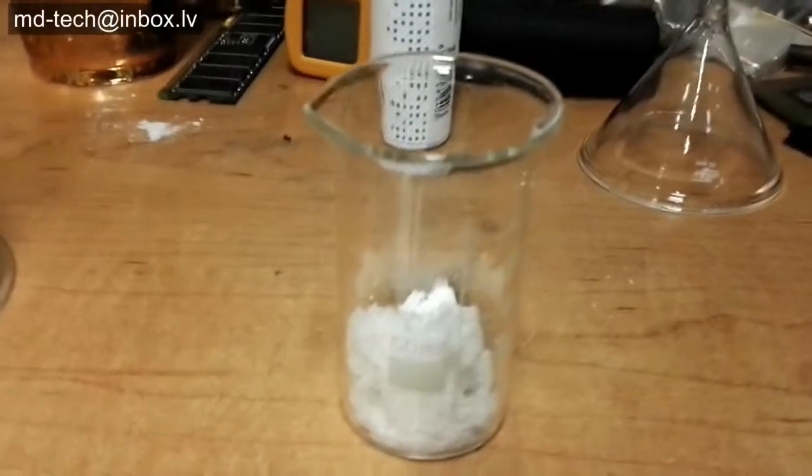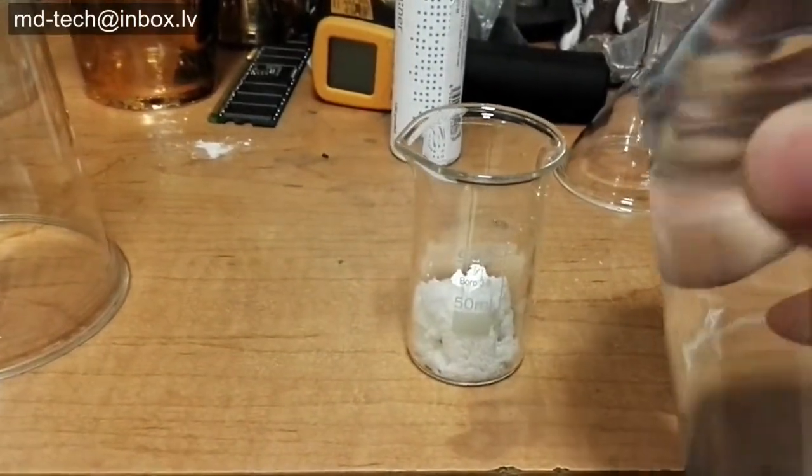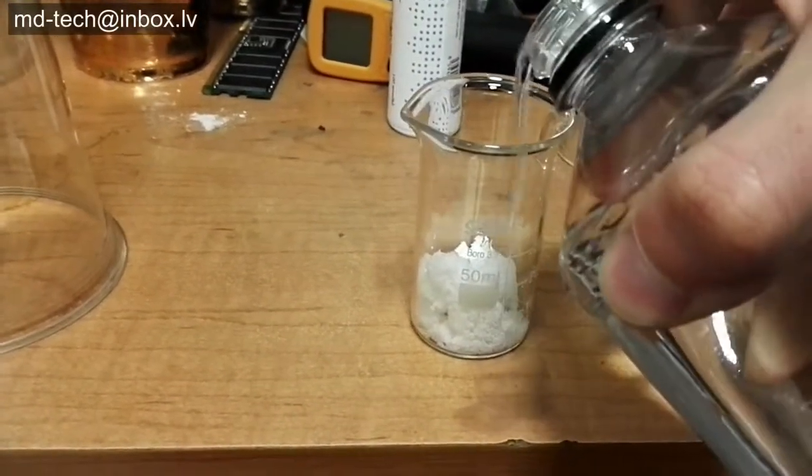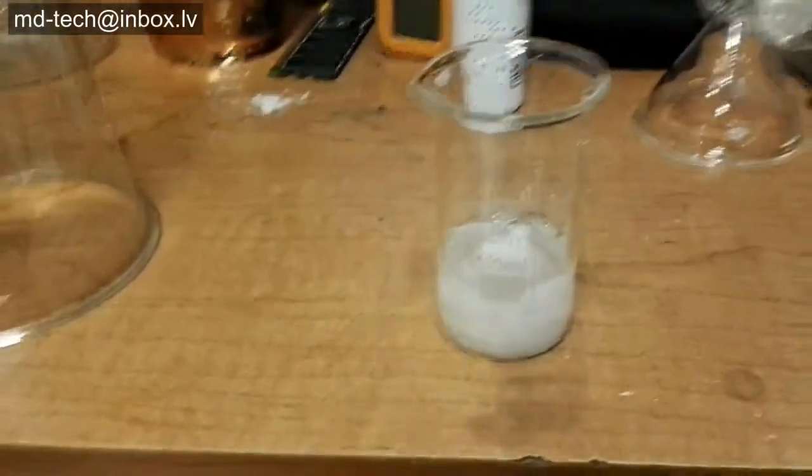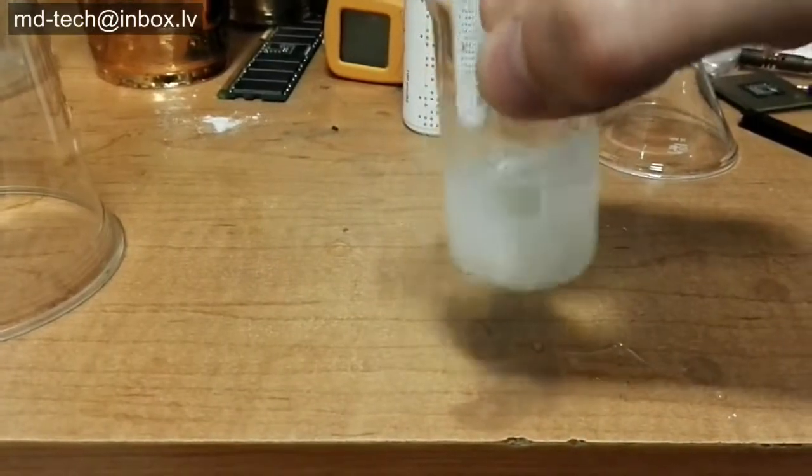Pour 4 grams of potassium iodide into a test tube. Add about 3 milliliters of distilled water to the test tube. Shake the test tube to dissolve the potassium iodide in the water.